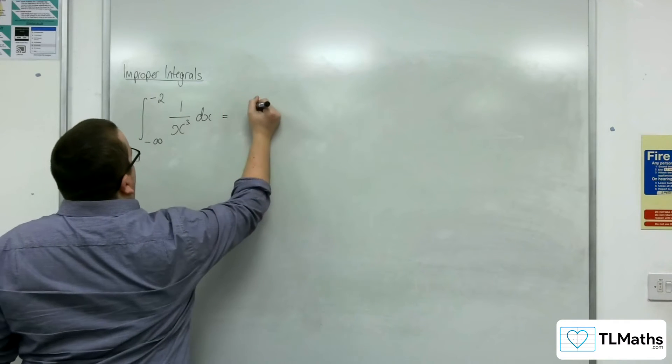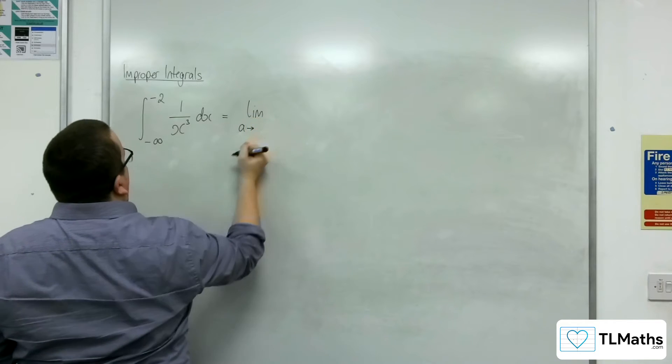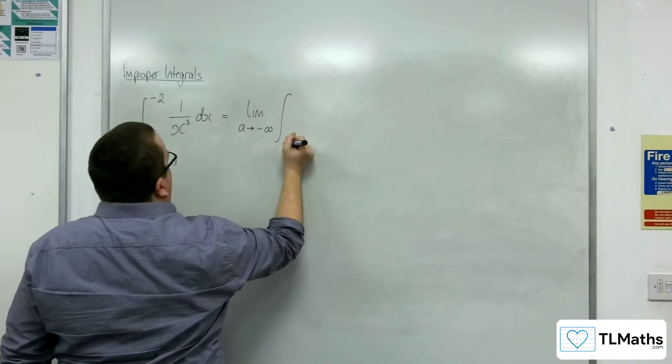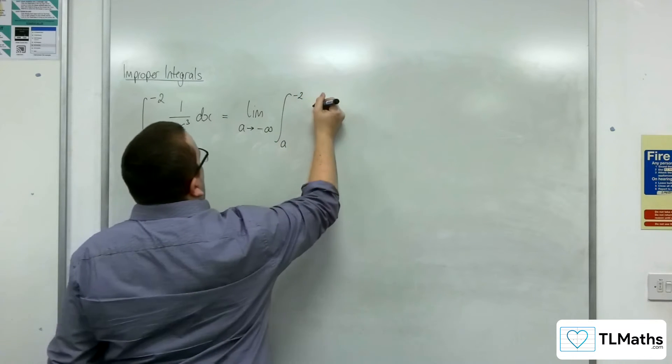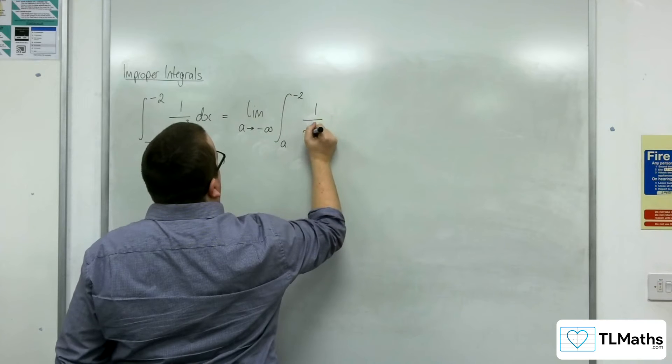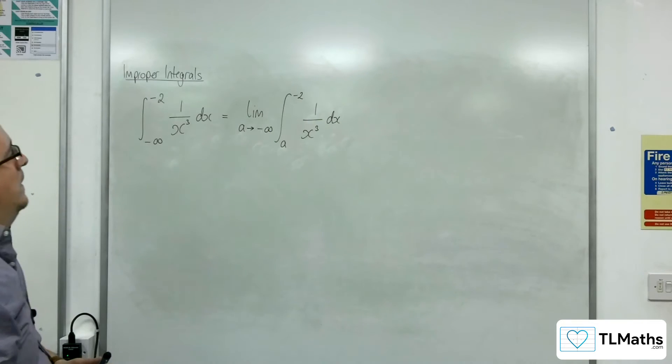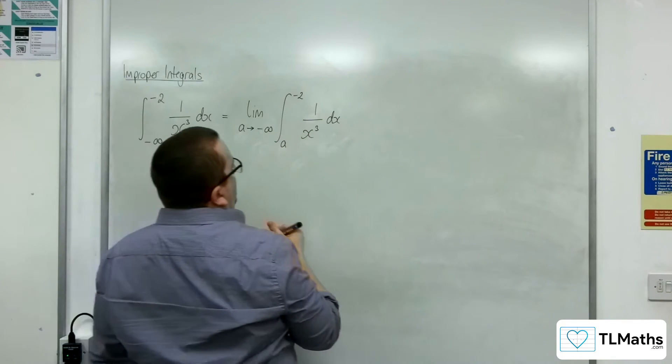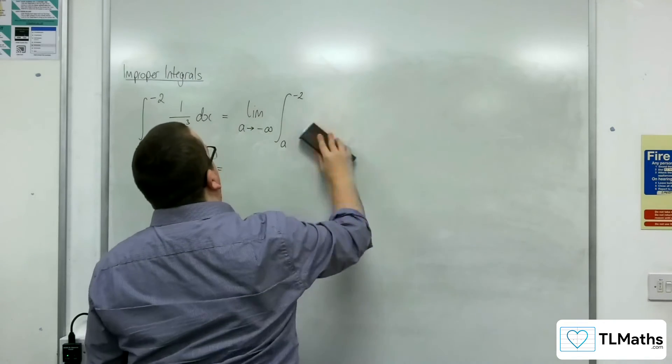I'm going to write that this is equal to the limit as a tends to negative infinity of the integral between a and minus 2 of 1 over x cubed dx. Now, 1 over x cubed, I'm just going to write as x to the minus 3.